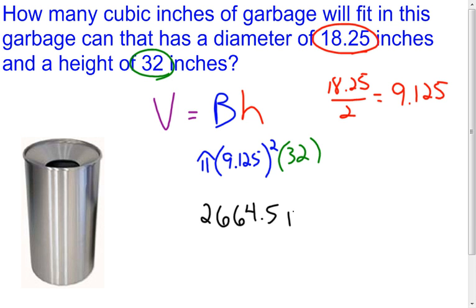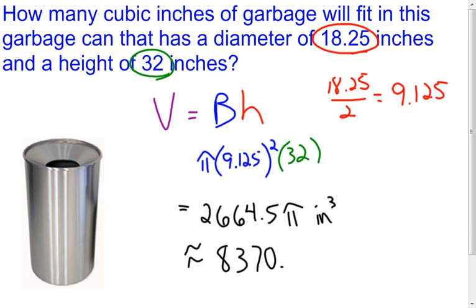That gives the value before multiplying by pi, so 2,664.5 pi would be the exact value in cubic inches. For the approximate value, I multiply that number by pi using the pi button on my calculator, and I end up with 8,370.77 cubic inches. That is the volume of my cylindrical can.